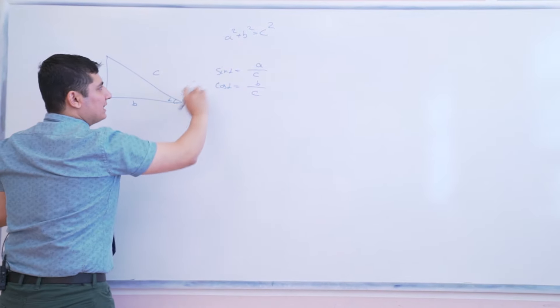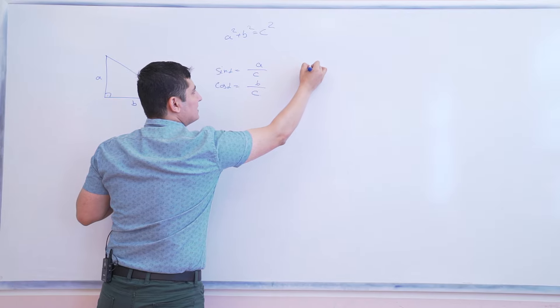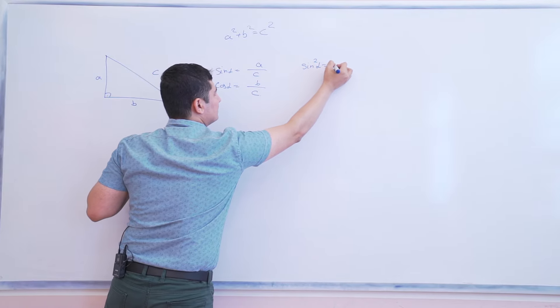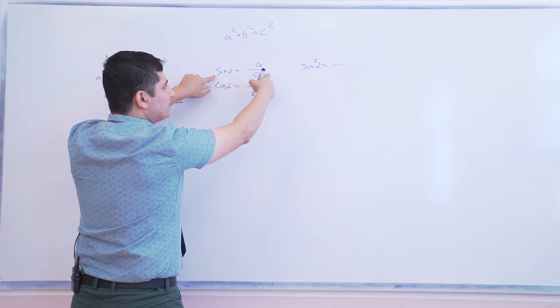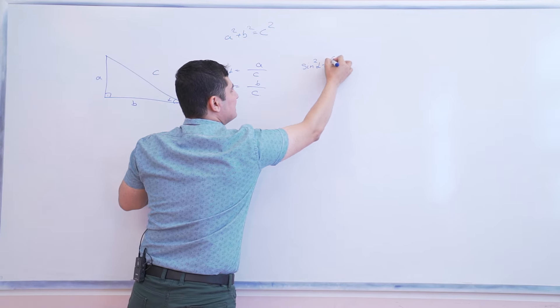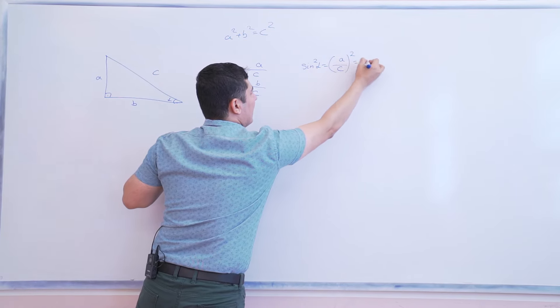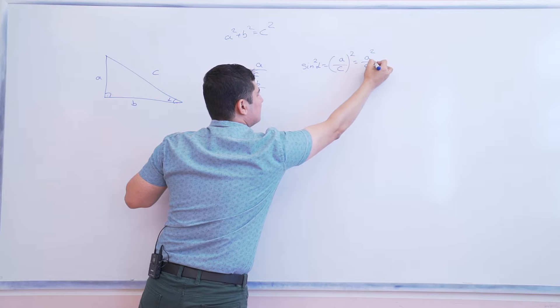Now guys, from here let's try to find the sine squared alpha. Sine squared means if we get both sides squared we get A divided by C squared. It means A squared divided by C squared.